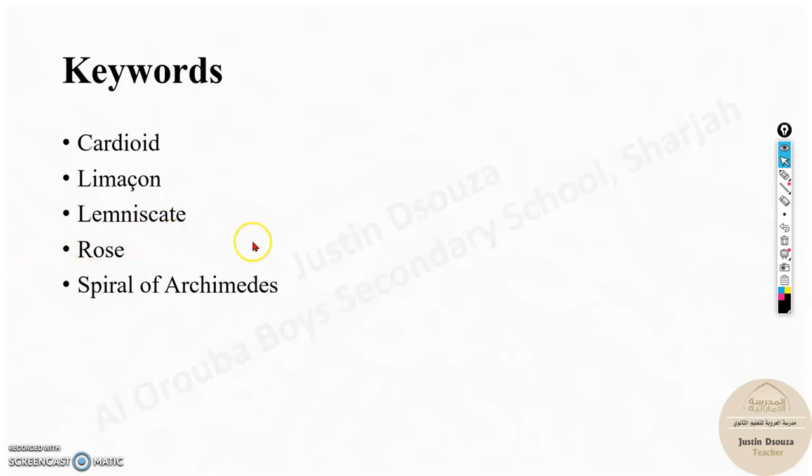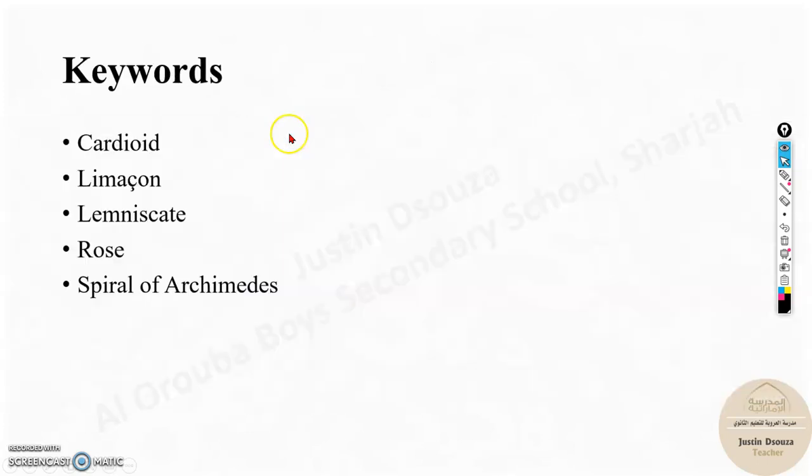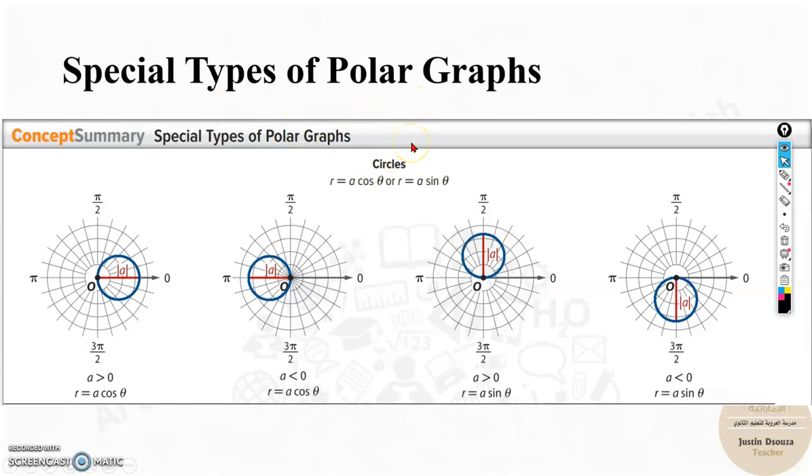Before we continue with the lesson, I will just introduce a little bit on this special type of curves, the keywords. And then from the next video, we will solve example problems of this lesson. Now these are the special types of polar graphs. Polar is relating to circle, angle circle. First is circles, basic circles.